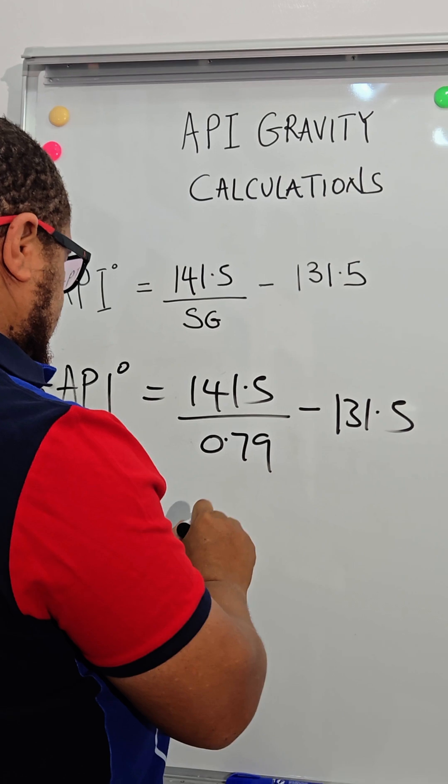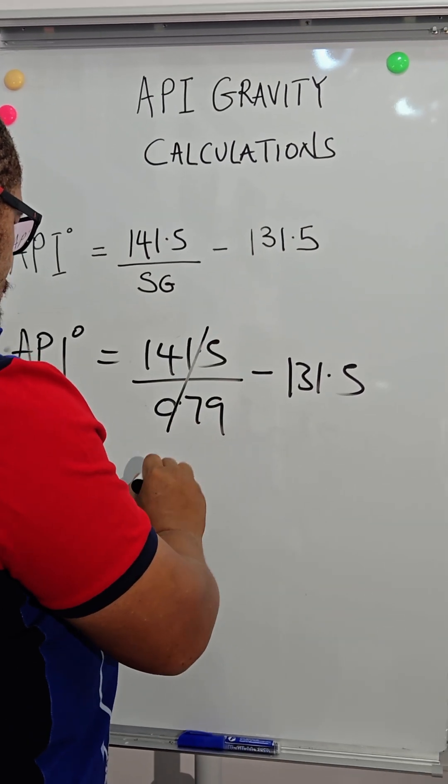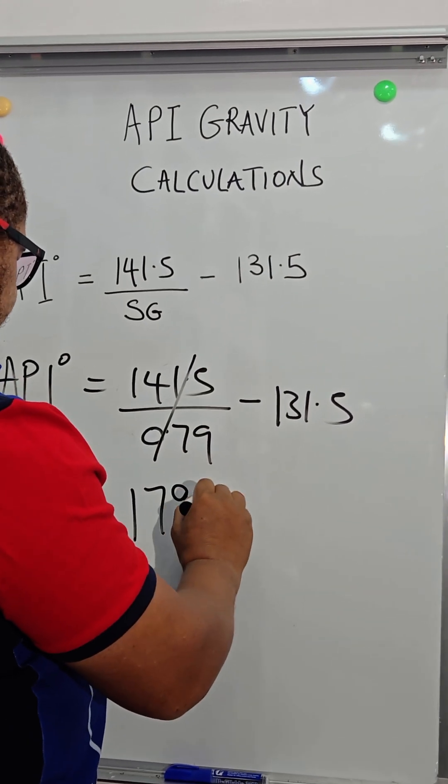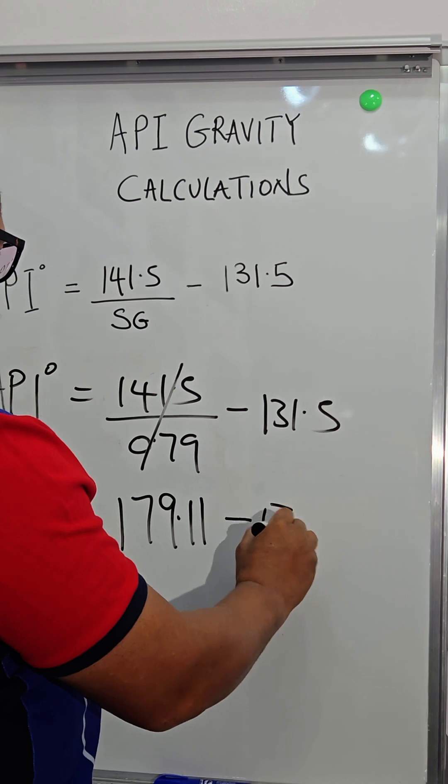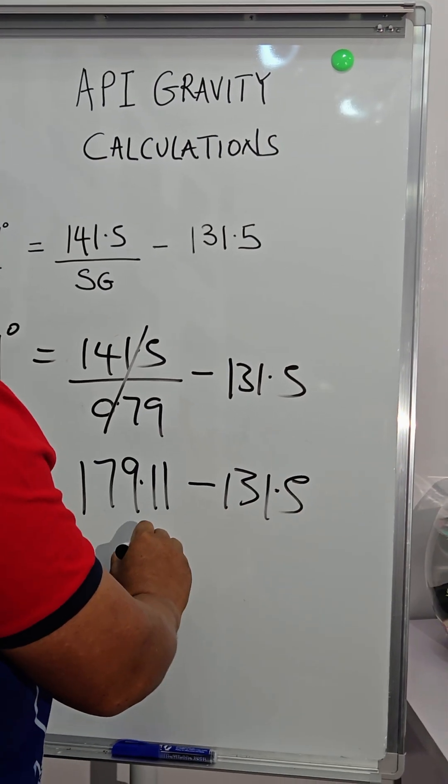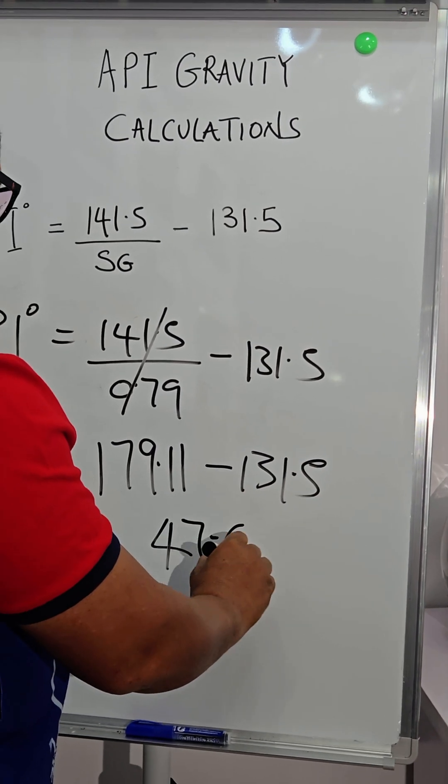So if you do the math quickly, this should be about 179.11, so minus 131.5. Subtracting, you are going to have it to be 47.6.